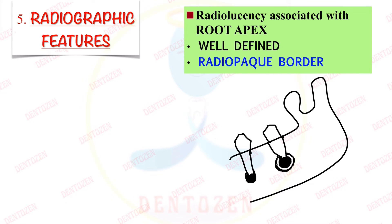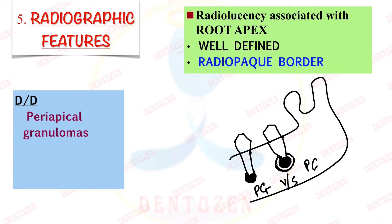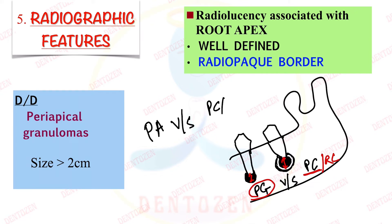An important viva question: which other lesion can look similar to a periapical cyst on radiograph? That is periapical granuloma, which also presents as a periapical radiolucency. To differentiate between the two: if the size is more than 2 cm, we consider it a periapical cyst or radicular cyst; if less than that, we suspect periapical granuloma. Periapical abscess can be differentiated because its radiolucency borders are irregular, whereas in periapical cyst the borders are well-defined.